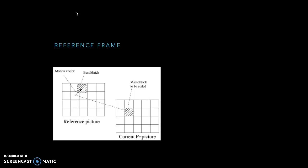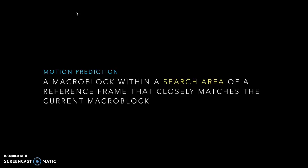An object has moved down towards the left, and motion prediction is the process of finding a macroblock within a search area of a reference frame that closely matches the current macroblock.